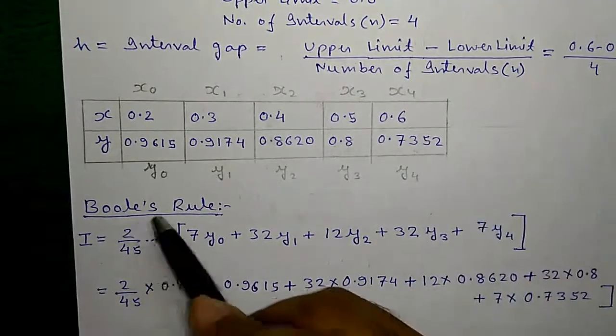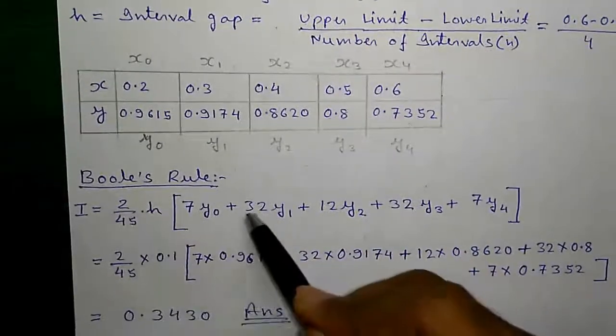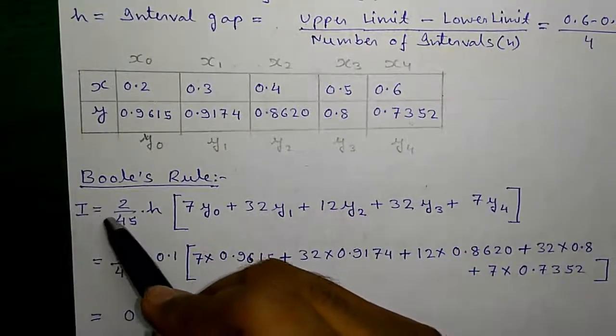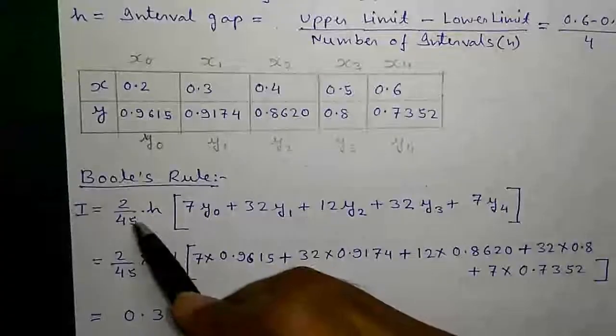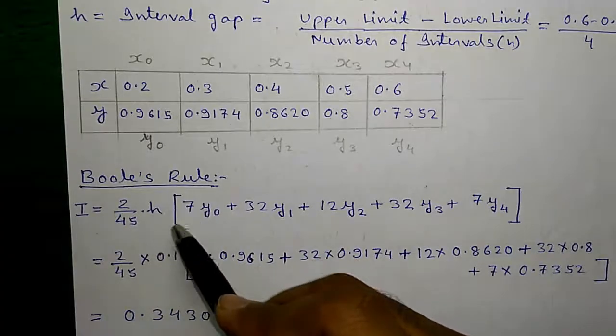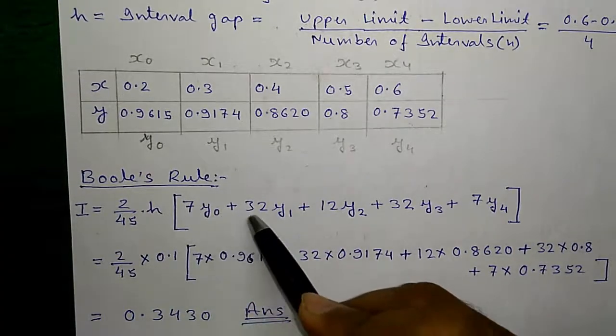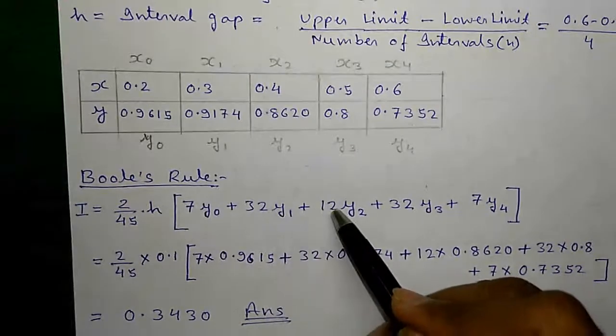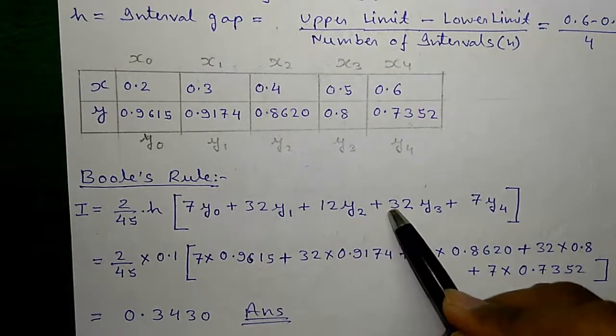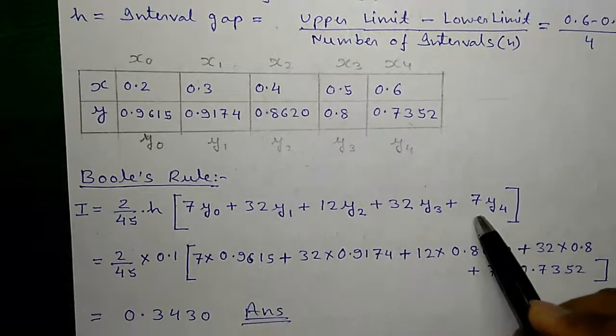Now we'll put the values into Boole's Rule, and this is Boole's Rule: I equals 2 by 45 into h, into 7 into y0 plus 32 into y1 plus 12 into y2 plus 32 into y3 plus 7 into y4.